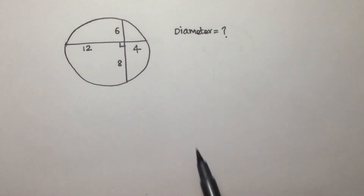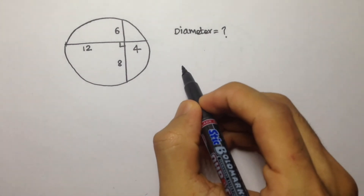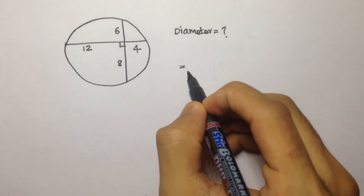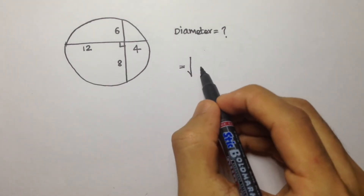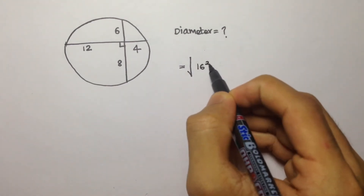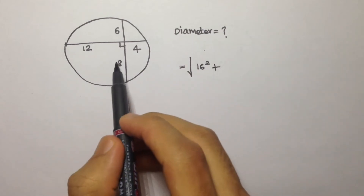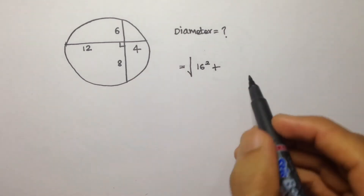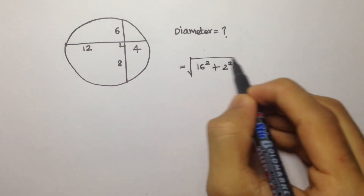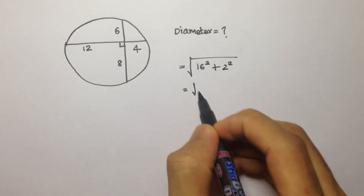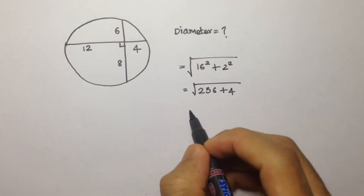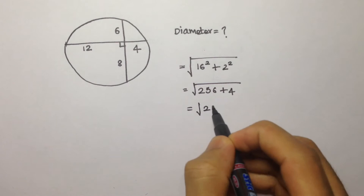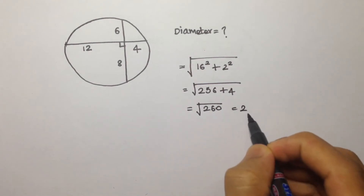To find the diameter of the circle, we take the sum of the two segments of one chord: 12 plus 4 is 16. Then we take the difference of the other two segments: 8 minus 6 is 2. The diameter is the square root of 16 squared plus 2 squared, which is the square root of 256 plus 4, giving us root of 260.